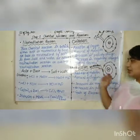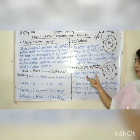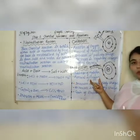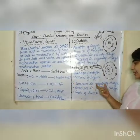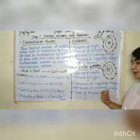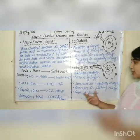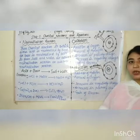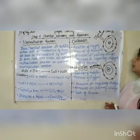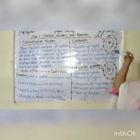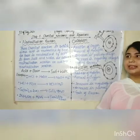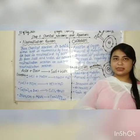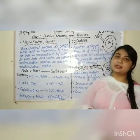ऐसे ही reduction में क्या होगा? Addition of hydrogen, removal of oxygen, increases in negative charge, decreases in positive charge। और जहाँ oxidation में loss होता है electron का, तो reduction में होगा gain of electron। इस diagram से आप याद रख सकते हैं। Next class में हम examples करेंगे — examples of oxidation and examples of reduction।